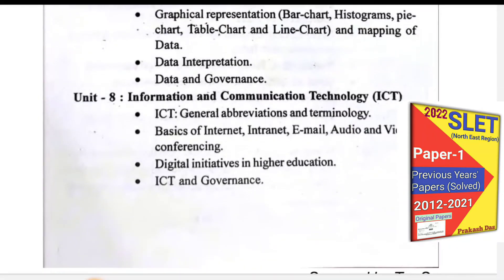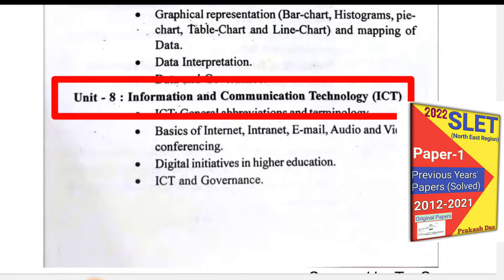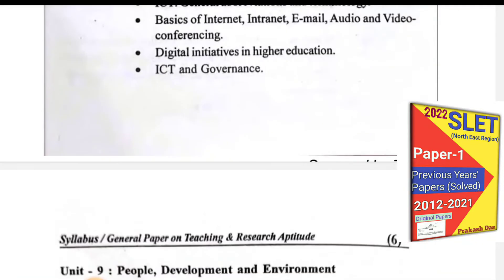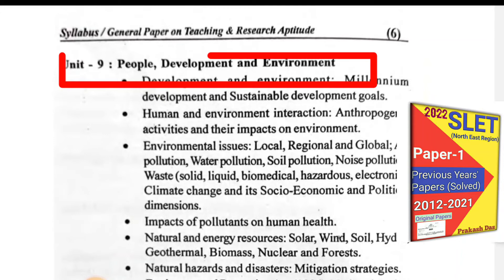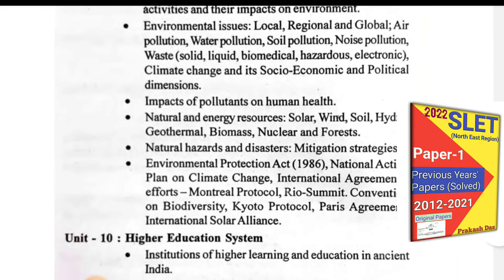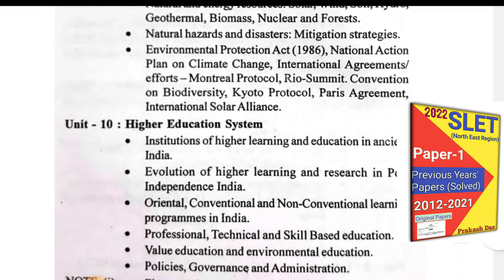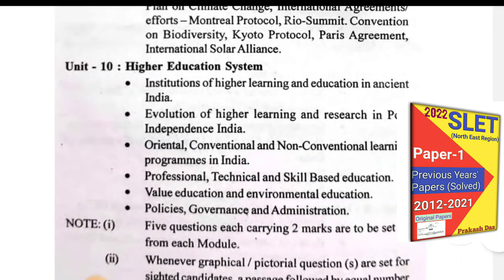Unit Seven is Data Interpretation, Unit Eight is Information and Communication Technology (ICT), Unit Nine is People, Development and Environment, and the last unit — Unit Ten — is the Higher Education System of India. You can see all the units and lessons here.